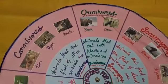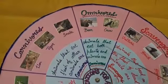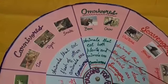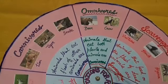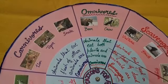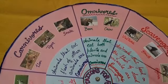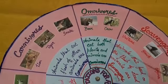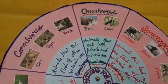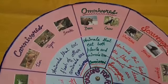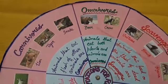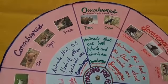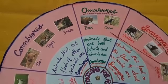Omnivores. Animals that eat both plants and animals are called omnivores. These are the animals which are dependent on both plants and animals, and they are called omnivores. Examples are bear, crow, and pig.